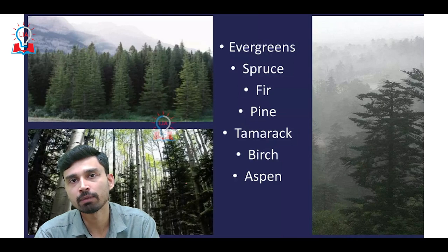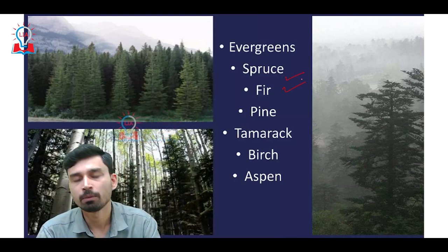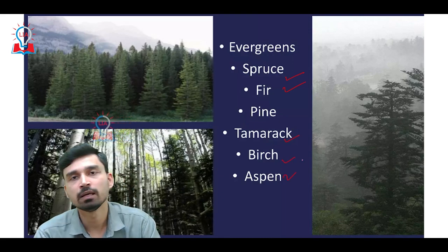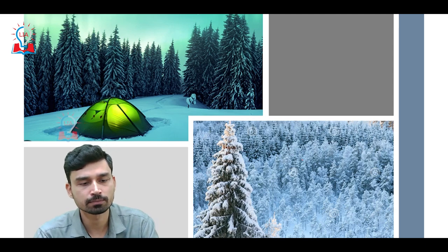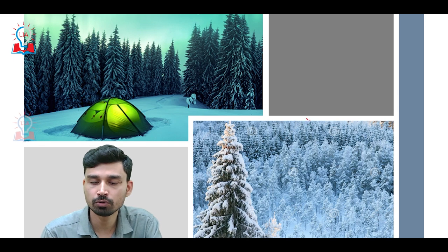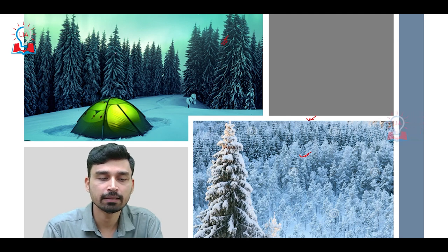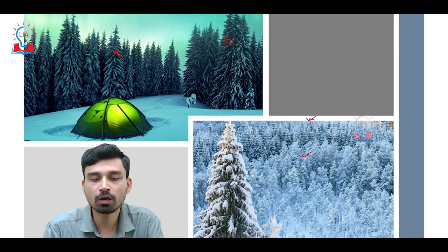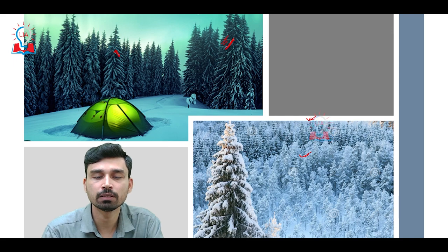These are the three major characteristics that help coniferous trees survive the harsh Taiga winter climate. The major coniferous trees found in the Taiga include spruce, fir, pine, tamarack, birch, and aspen. Looking at a picture of the Taiga forest in winter, the entire area is covered by snow, and the conical shape and small leaves of the trees have prevented large-scale snow accumulation, preserving the physical structure of the trees.